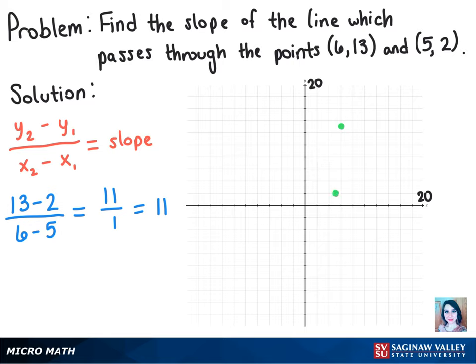So all we have to do is go up 11 and over, or down 11 and over the other way. And we can get a couple of our points.